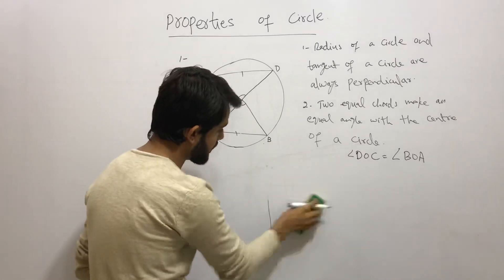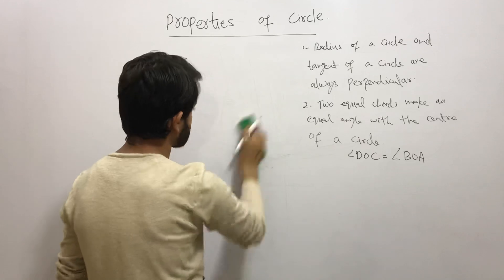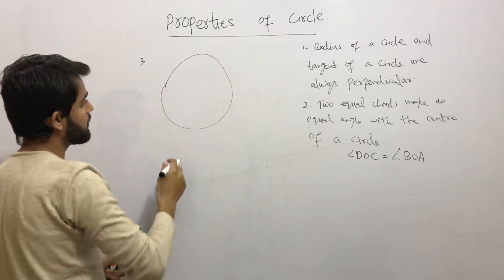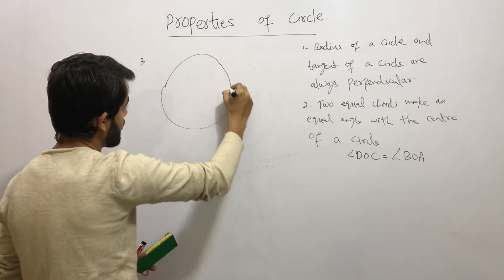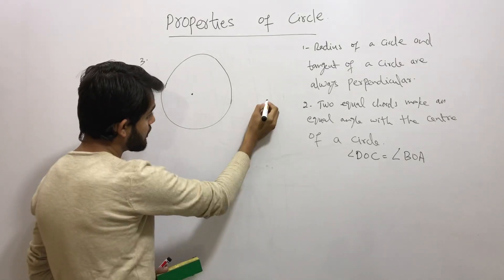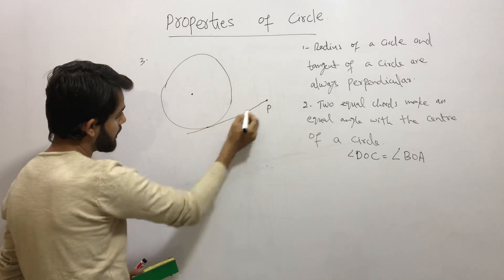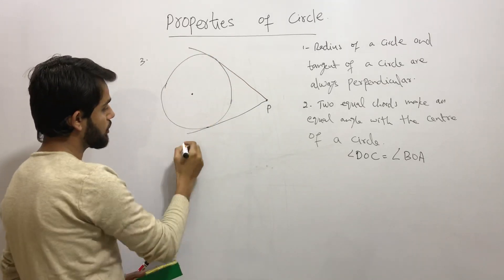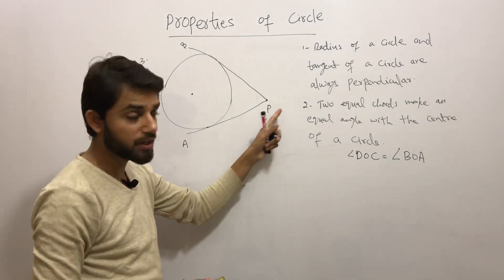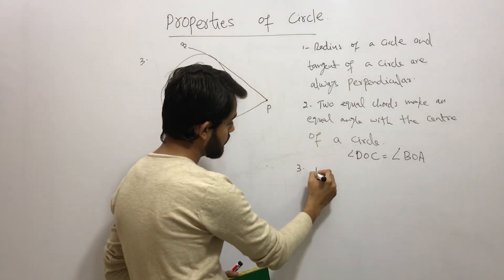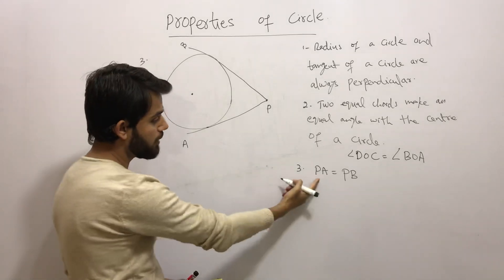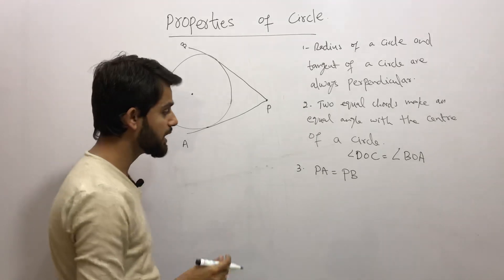The third property of a circle is about a point taken outside the circle. If we take an external point P and draw two tangents from P to the circle, calling them PA and PB, then the third property states that the lengths of tangents drawn from an external point are always equal. So PA equals PB.